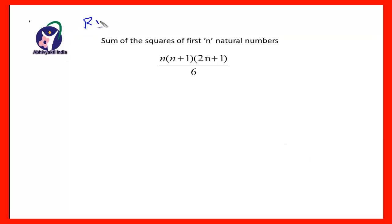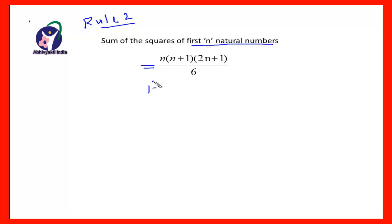Rule 2: the sum of the squares of the first n natural numbers is given by n(n+1)(2n+1) divided by 6. Suppose you have to find the sum of 1² + 2² + 3² + ... + 10².